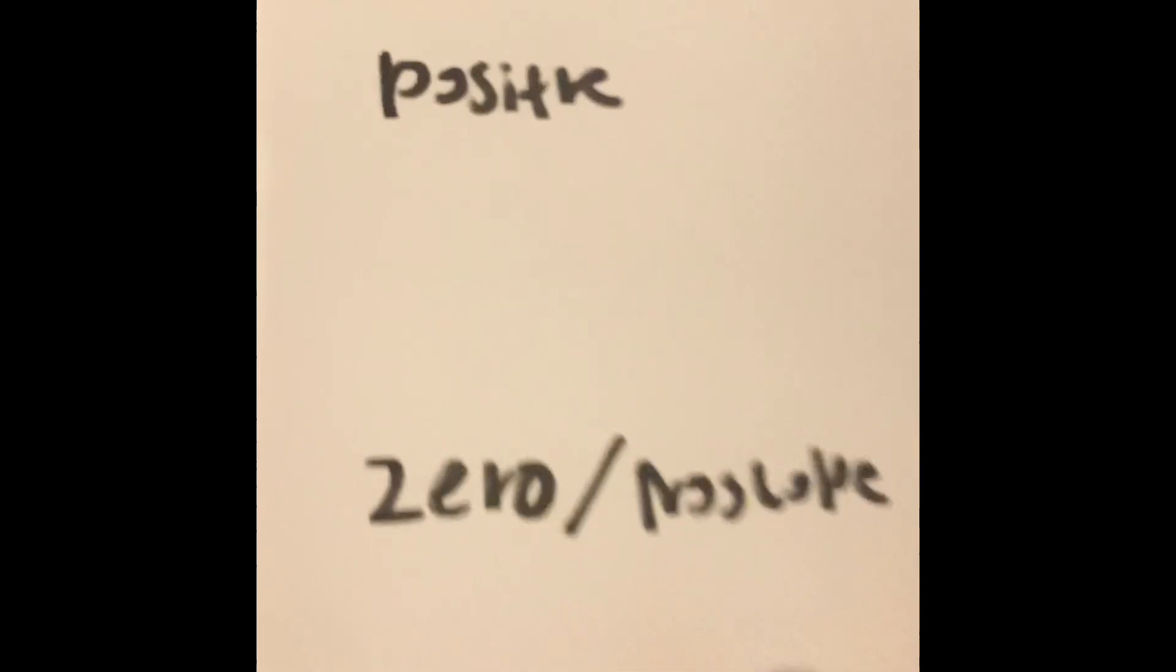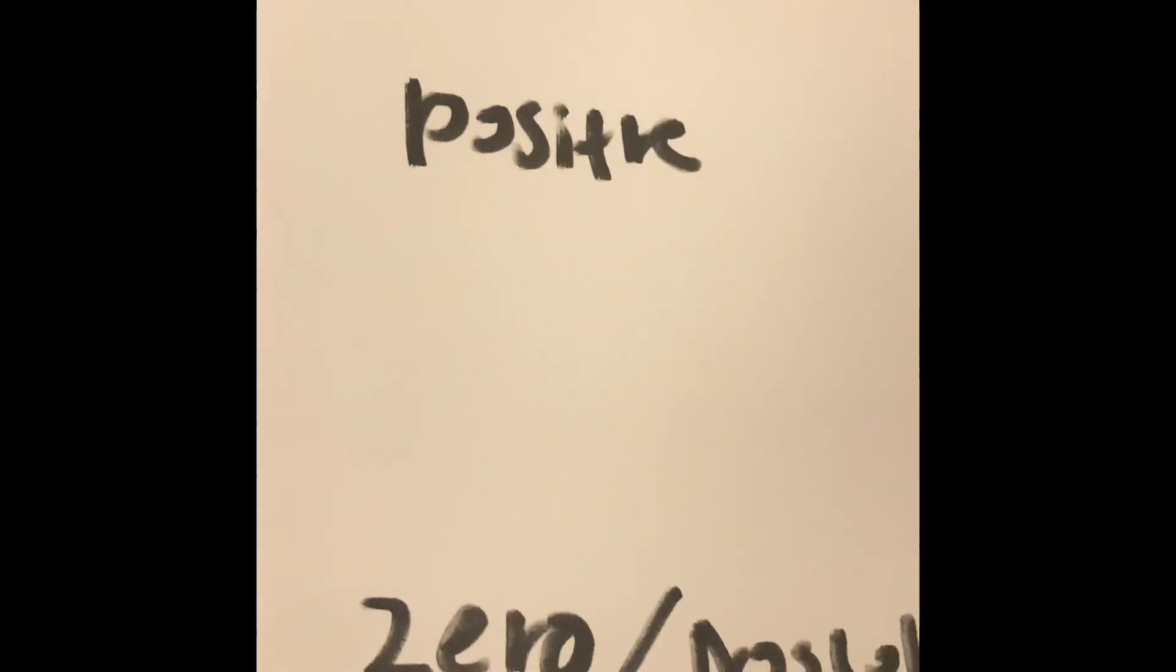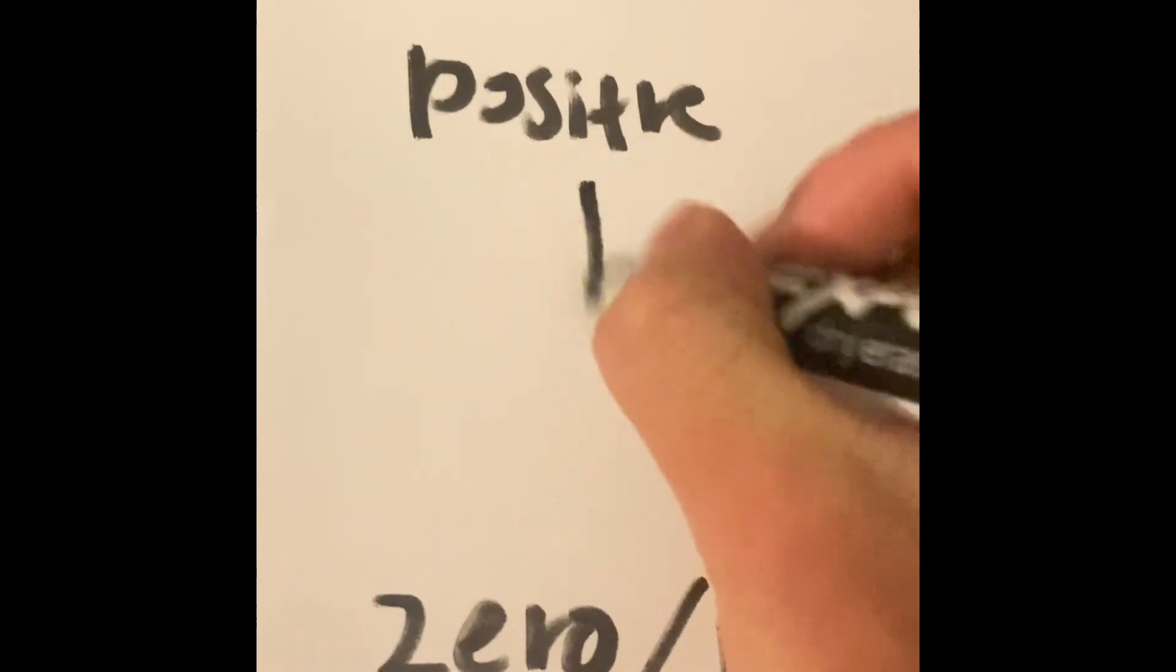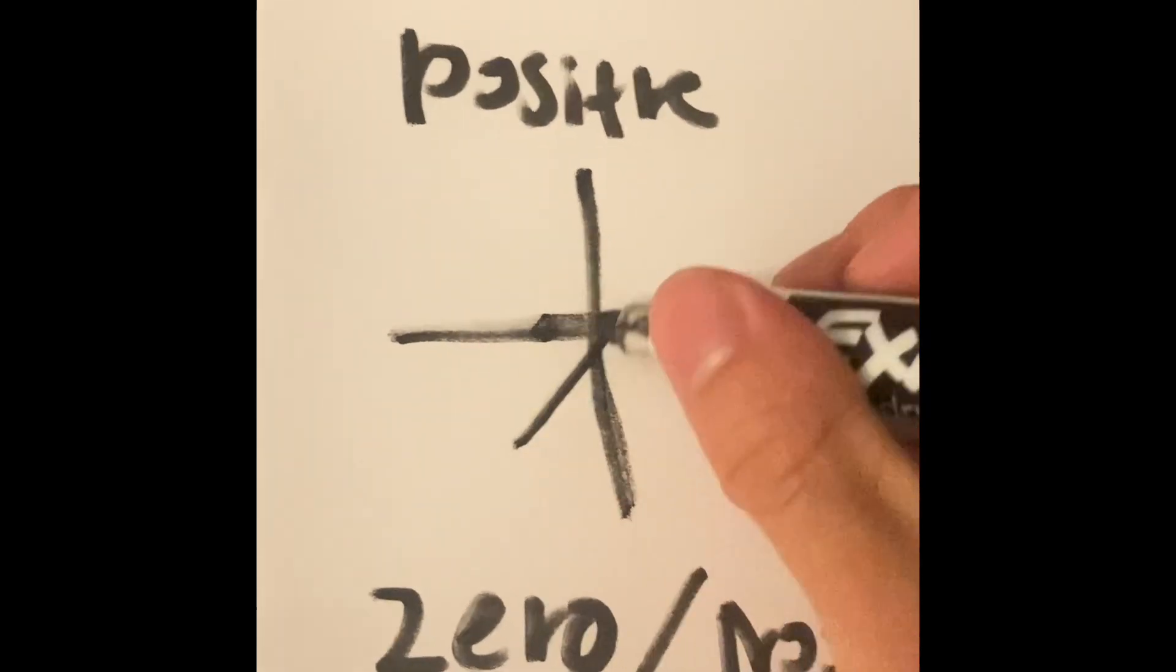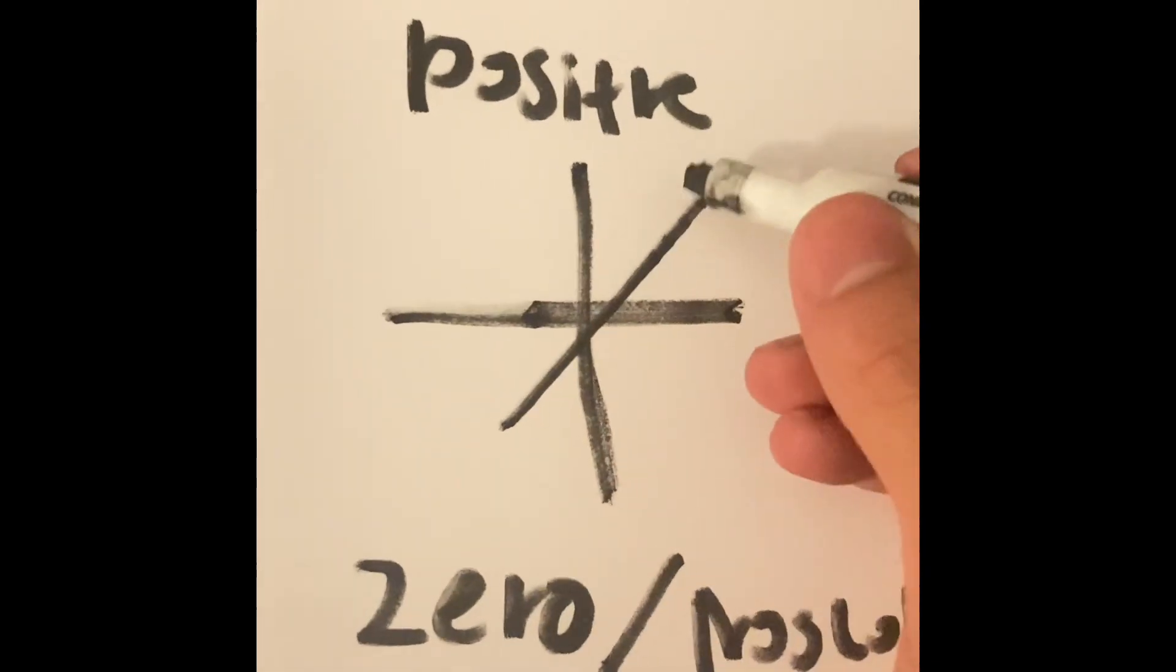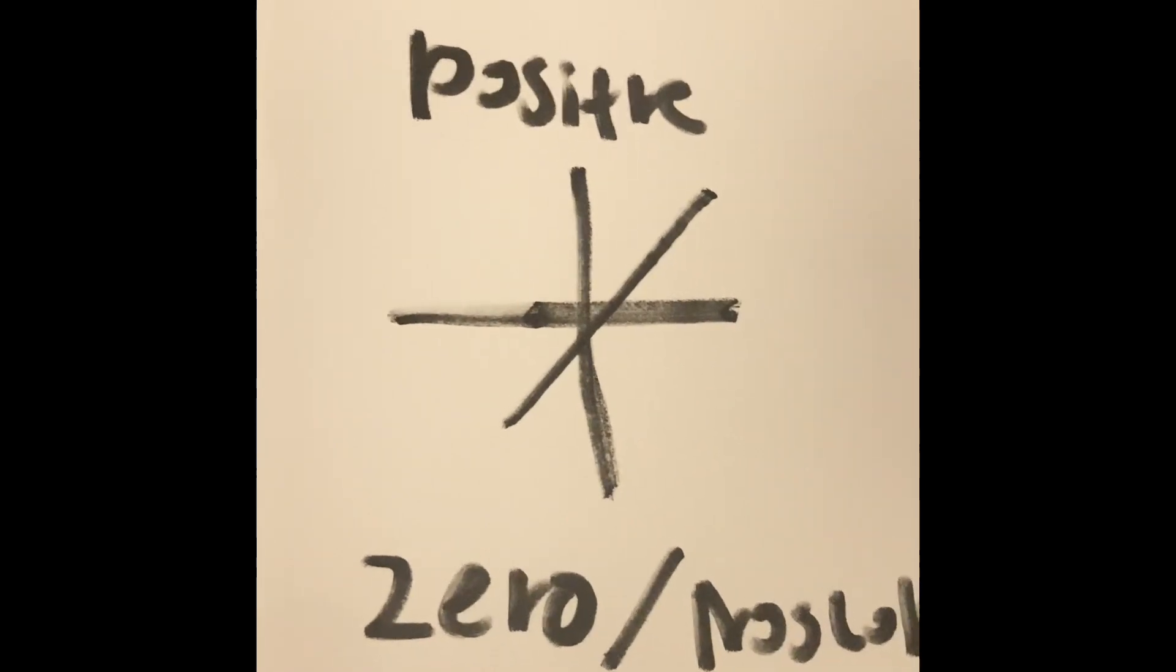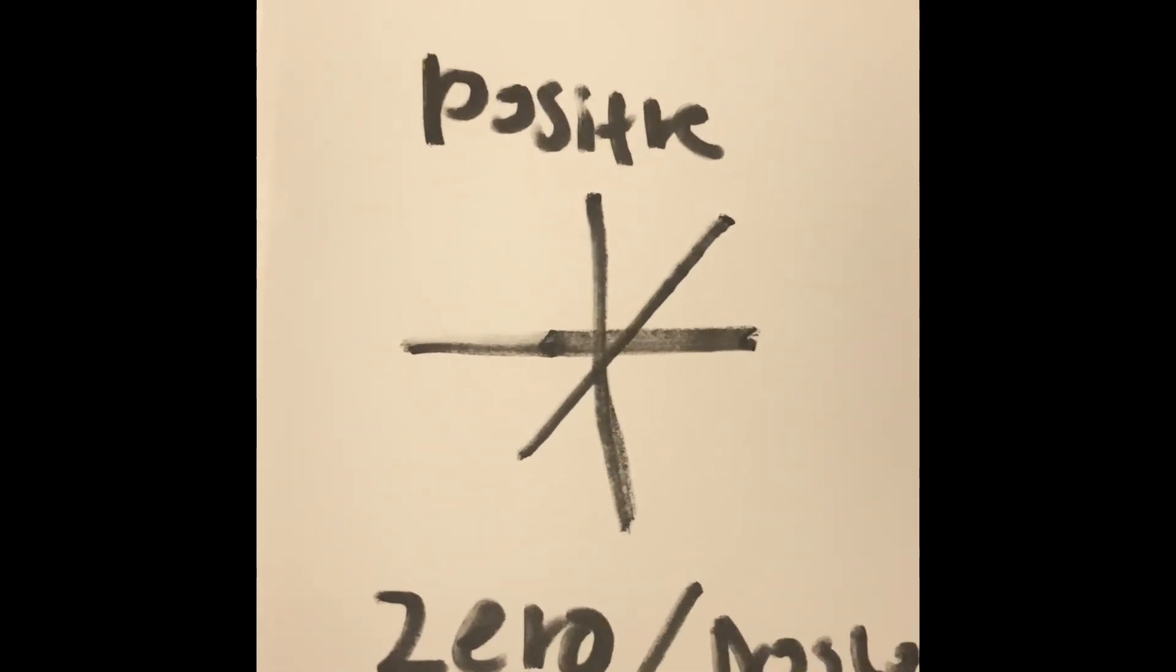Let's start with the positive slope. So a positive slope happens when you have a line on a graph and it goes from the left side to the right side and it's increasing. That is a positive slope. Here's an example where we would find a slope which would be increasing.